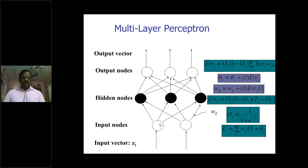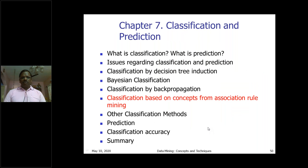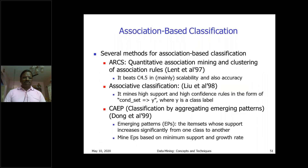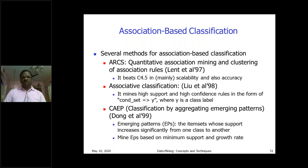Multi-layer perceptron uses three layers to carry out neural network information processing. Next we discuss association-based classification. Several methods are available: quantitative association mining, clustering of association rules, associative classification, and CAEP classification by aggregating emerging patterns. Association rules are used to correlate more than one data variable. One very famous association rule approach is correlation analysis.